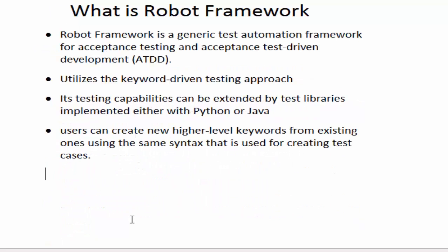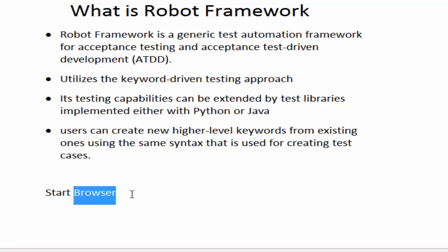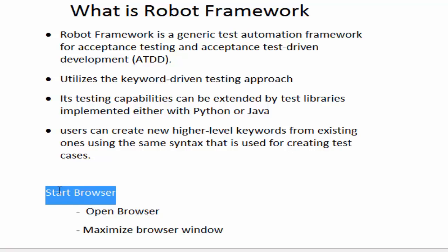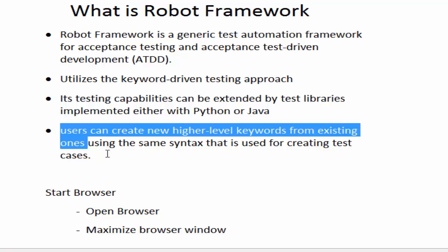For example, I can create a user-defined keyword called 'Start Browser', whose functionality is to open the browser and maximize it. Internally, this keyword uses two predefined keywords: 'Open Browser' and 'Maximize Browser Window'. That is a user-defined keyword — I have defined my own keyword and internally it uses the keywords provided by Robot Framework.